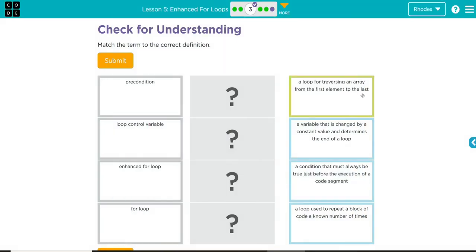Let's take a look at our terms here. A loop for traversing an array from the first element to the last. Well, that sounds like our enhanced loop. That goes from the first to last. We have no control where it stops. It's just all or nothing.